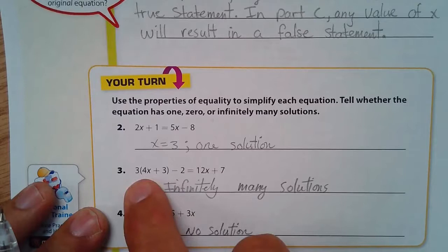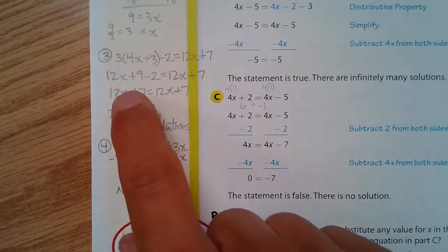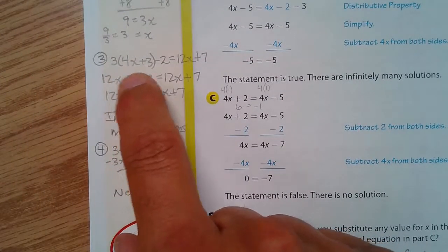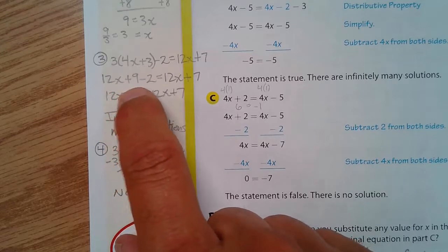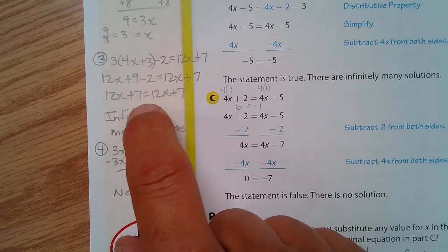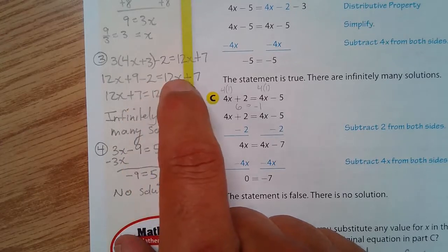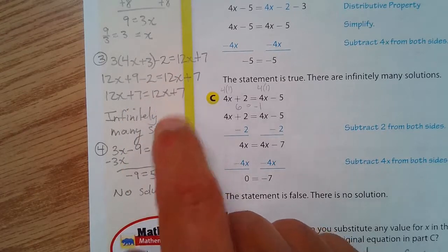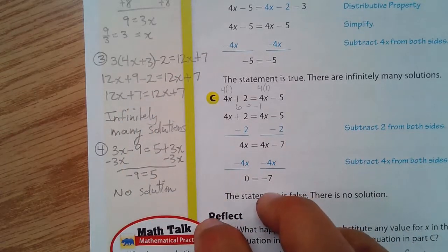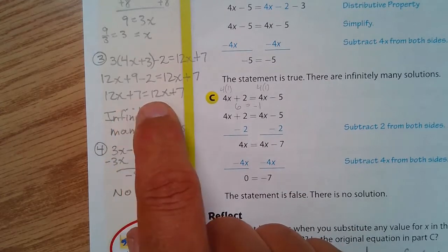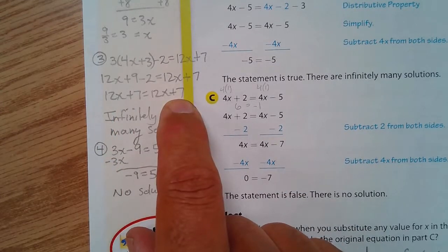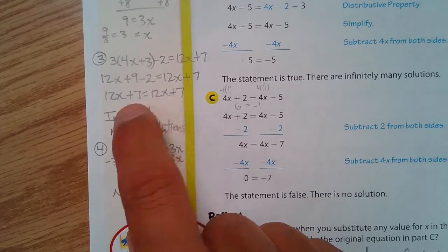The next one, this I did here. I distributed 3, so I got 12x plus 9 minus 2. And I have 9 minus 2, which is 7. And then on this side, I just kept that. And you know what? I really just stopped right here. 12x plus 7 equals 12x plus 7. I have the exact same thing on both sides.